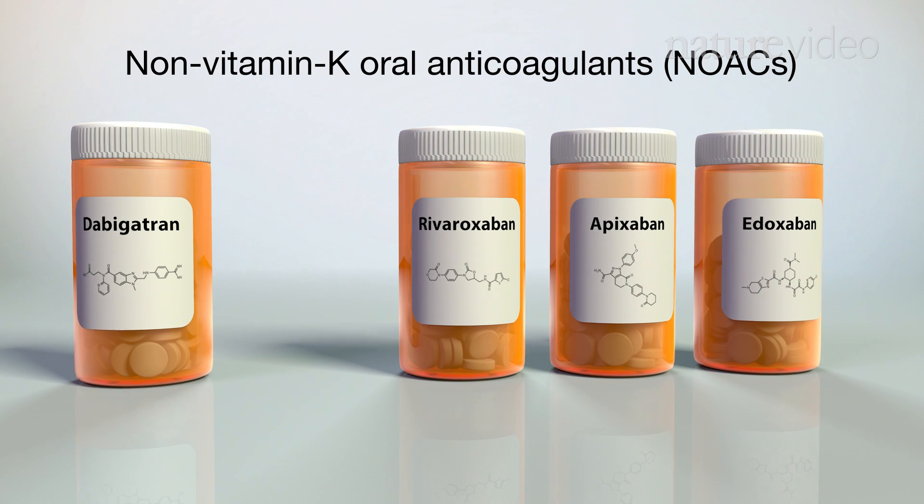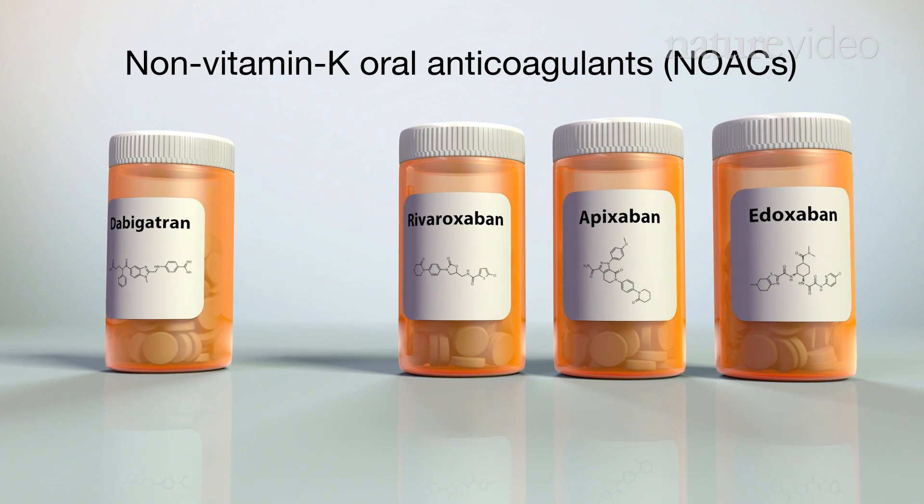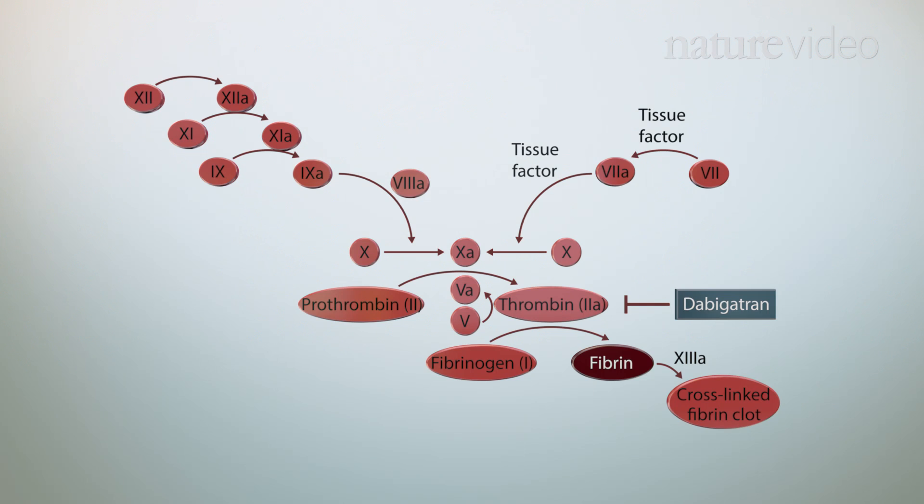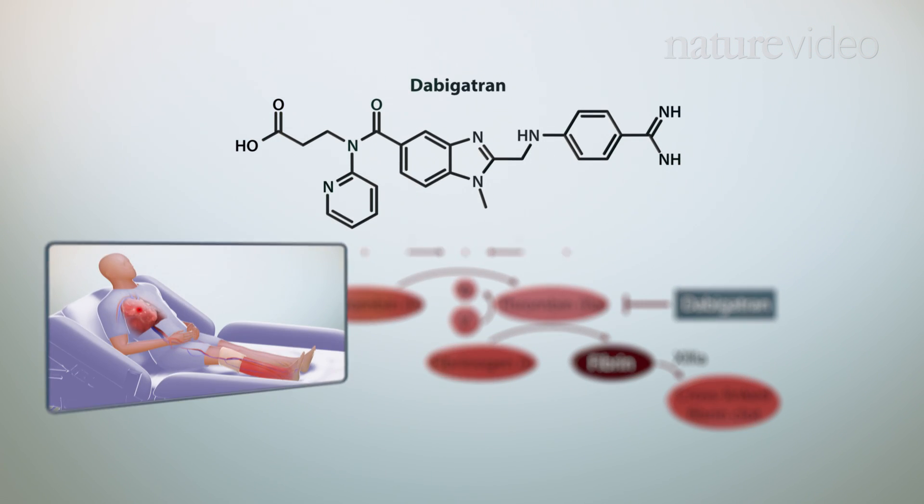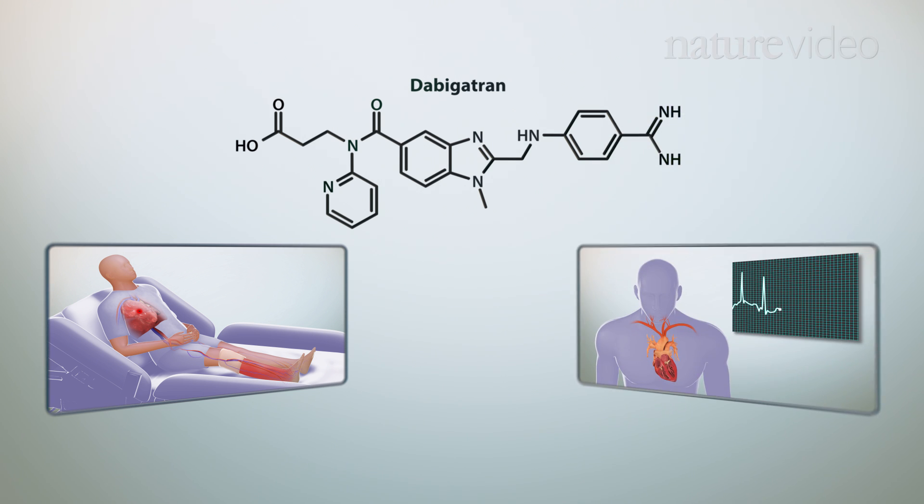Several non-vitamin K oral anticoagulants, or NOACs, have been developed over the past 15 years or so. Dabigatran is a direct thrombin inhibitor that has been approved for patients with deep vein thrombosis and pulmonary embolism, and some patients with atrial fibrillation.